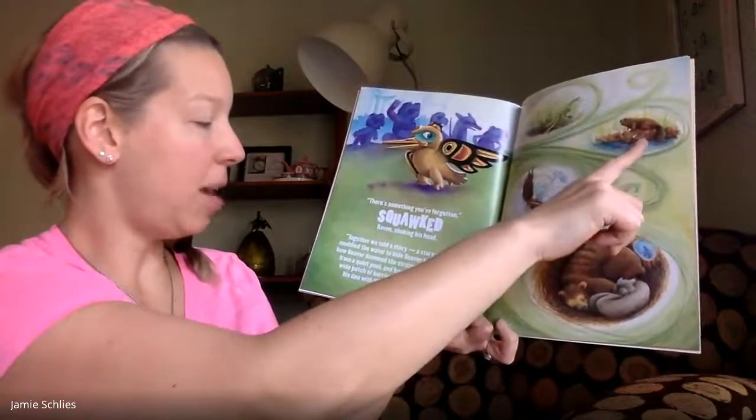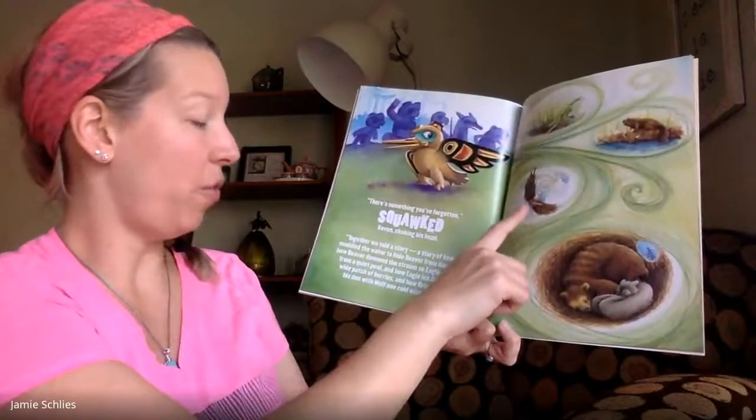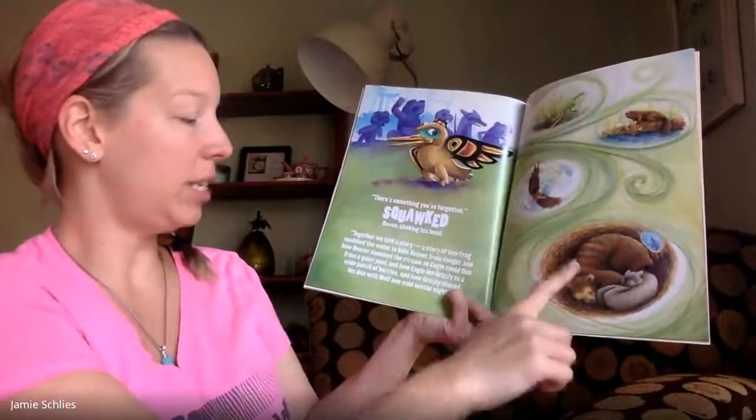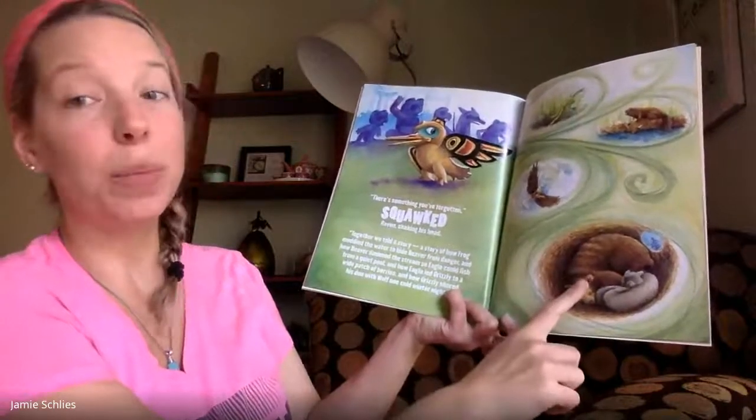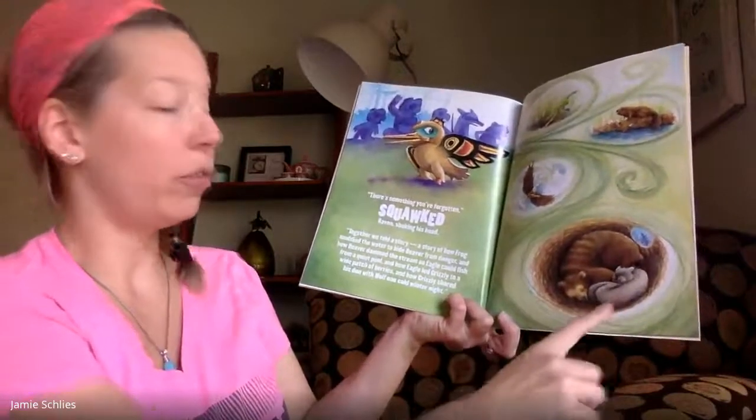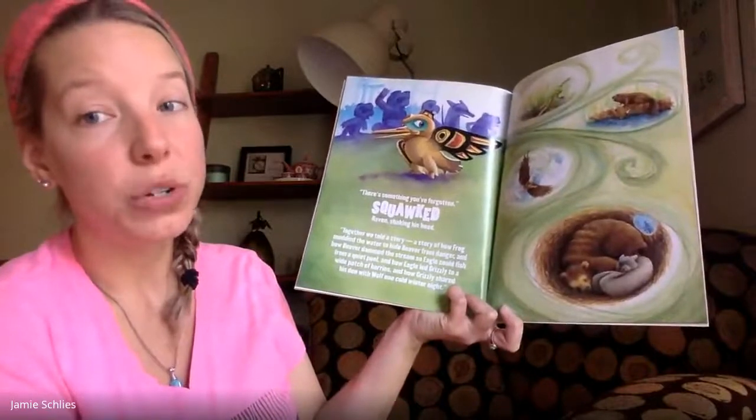And how beaver dammed the stream so that eagle could fish from a quiet pool. And how eagle led grizzly to a wide patch of wild berries. And how grizzly shared his den with wolf one cold winter night.